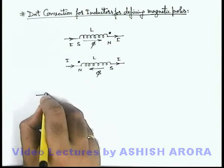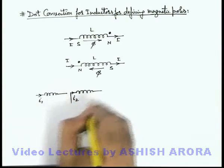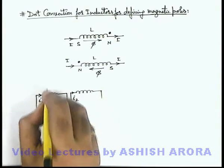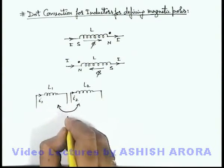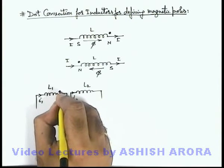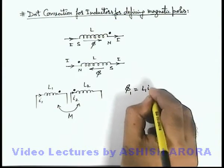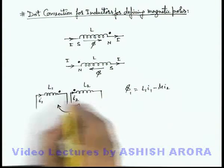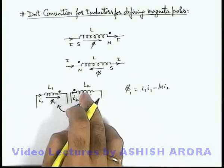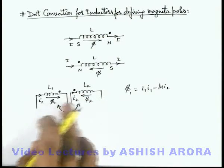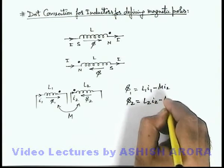The advantage of this is: if we are given 2 inductors placed close to each other in which currents i-1 and i-2 are flowing, with self inductions L-1 and L-2 and mutual induction M for the pair, then if the dots are on opposite sides of the inductors, the flux phi-1 in the first coil can be written as L-1·i-1 minus M·i-2. This is because the flux due to i-1 is from left to right, while due to i-2 in the other coil it is from right to left, so both fluxes oppose each other. Hence phi-1 = L-1·i-1 − M·i-2 and phi-2 = L-2·i-2 − M·i-1.